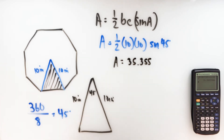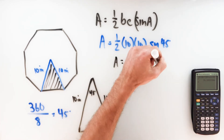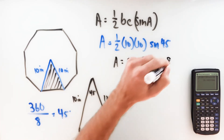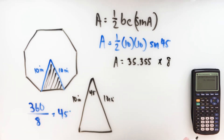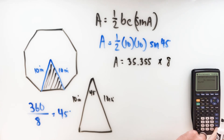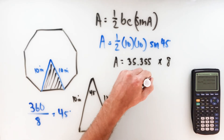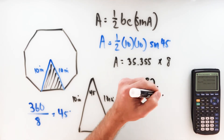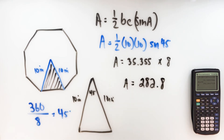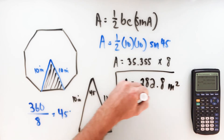We get about 35.355. Remember, this is just the area of one of eight triangles — eight congruent triangles in that regular octagon. So to get the area of the whole octagon, the last step is to multiply that by eight. Using what I've already got in my calculator — so I don't round — it looks like we've got a total area of 282.8 square inches.